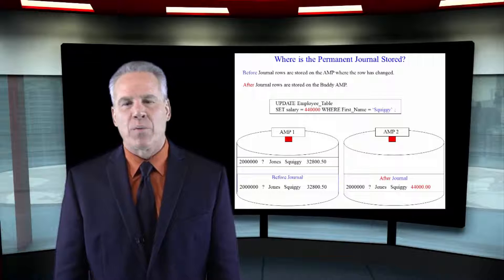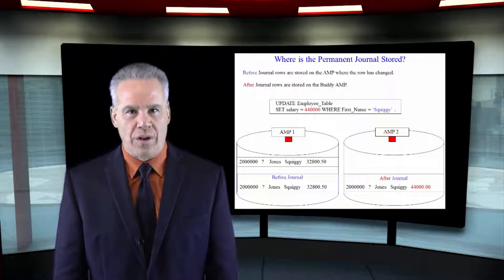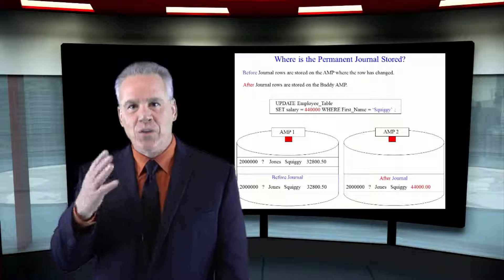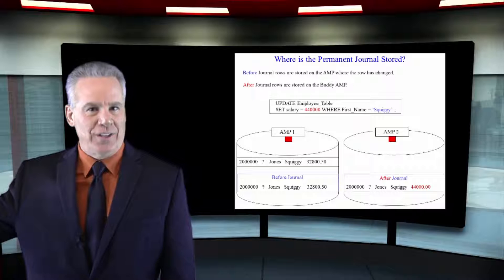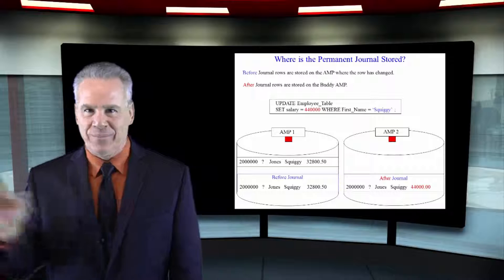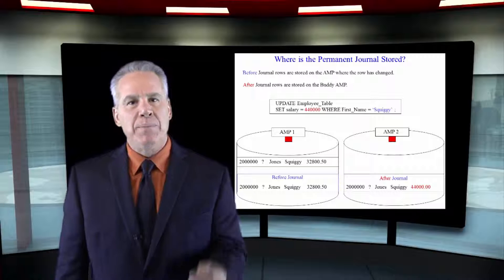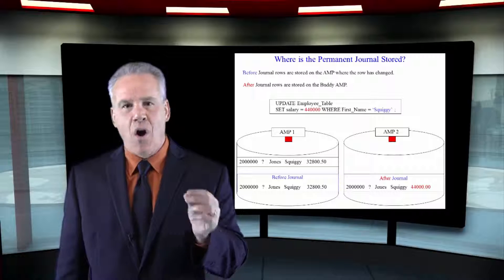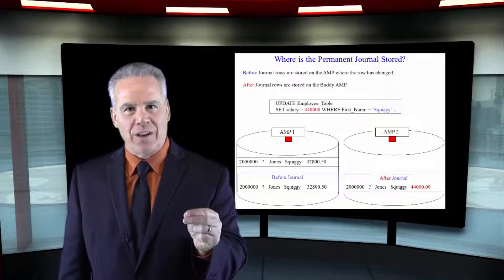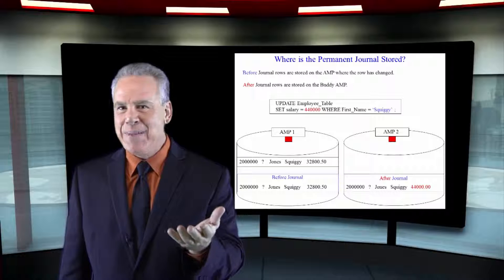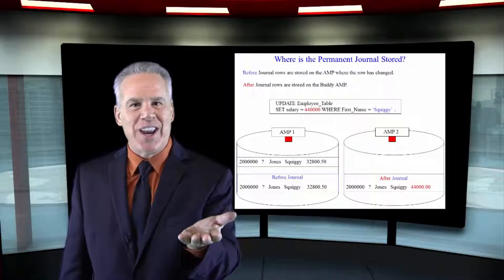Where are the permanent journals stored until you can copy them to disc or tape? Here's where they're stored. A before journal always stores its rows on the same amp that made the change.